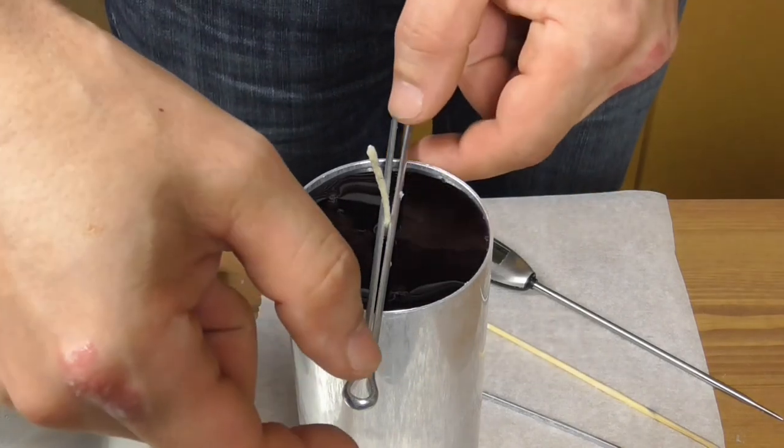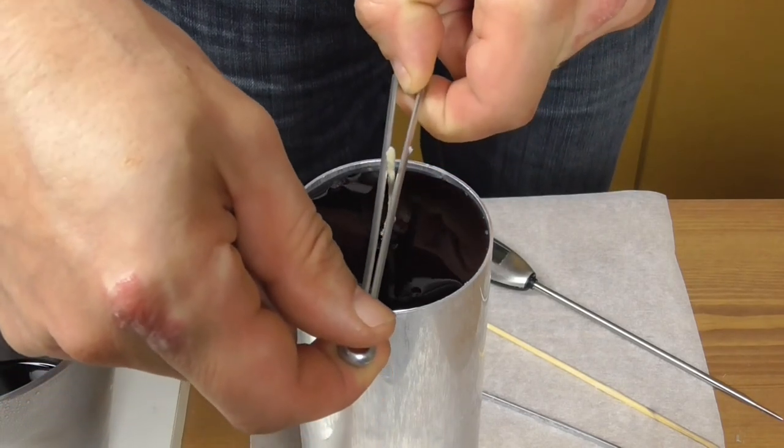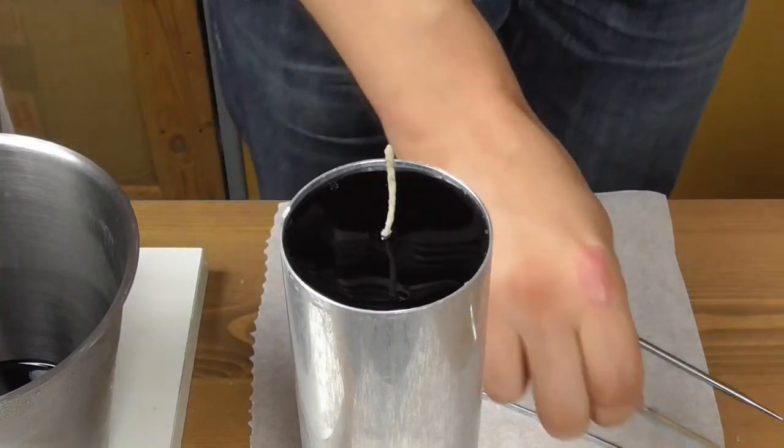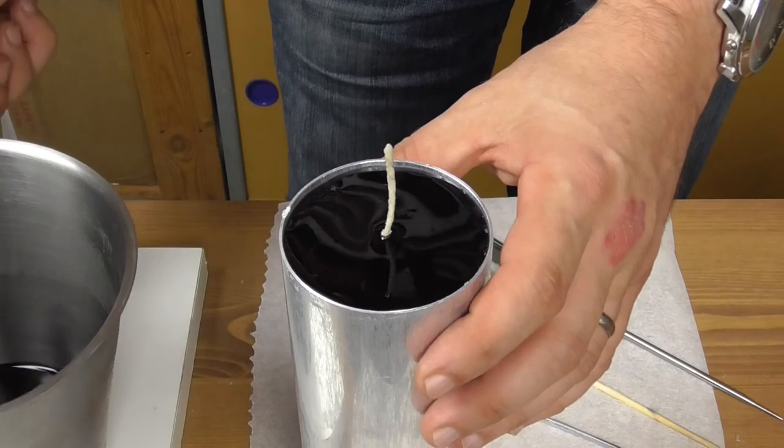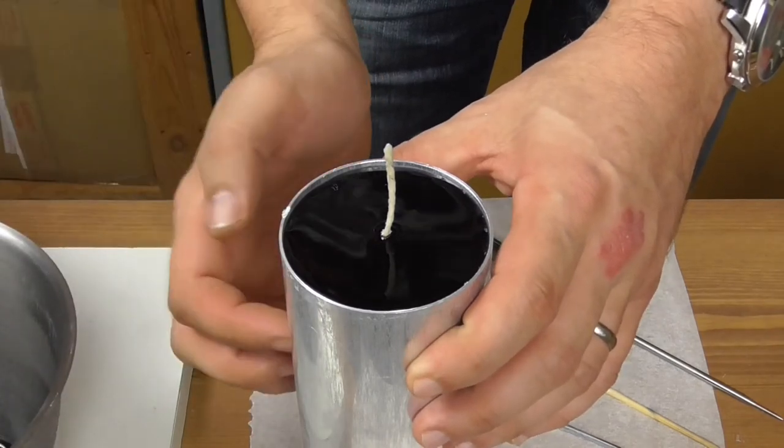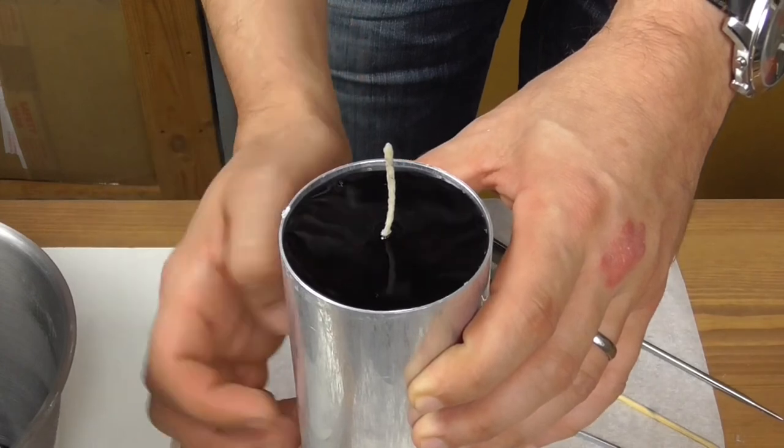The second pour is over. You can now remove the wick holder or leave it there if you prefer. Now, firmly hold the mold with one hand, without moving it, and with your other hand, gently tap the sides of the mold to help any remaining air bubbles escape to the surface while the wax is still fluid.